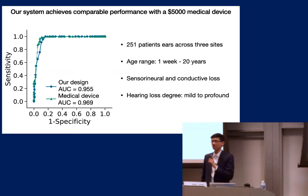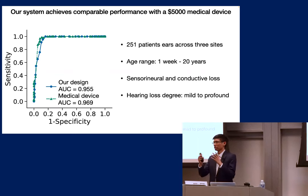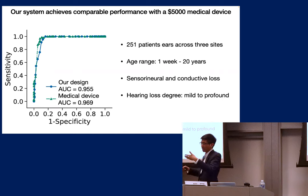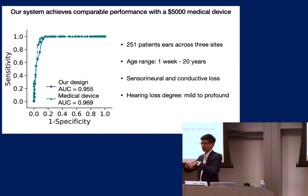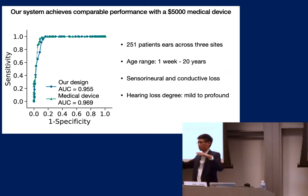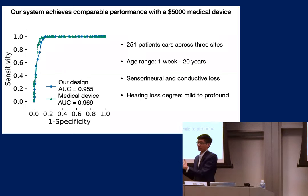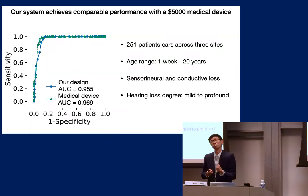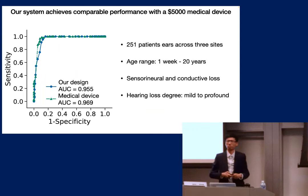Regarding ground truth accuracy: clinicians used a mix of prior newborn screening, clinical history, and their aggregated professional judgment across all clinical tests performed. Some patients had prior tests, some did not, but the doctor used their discretion to determine the ground truth label.